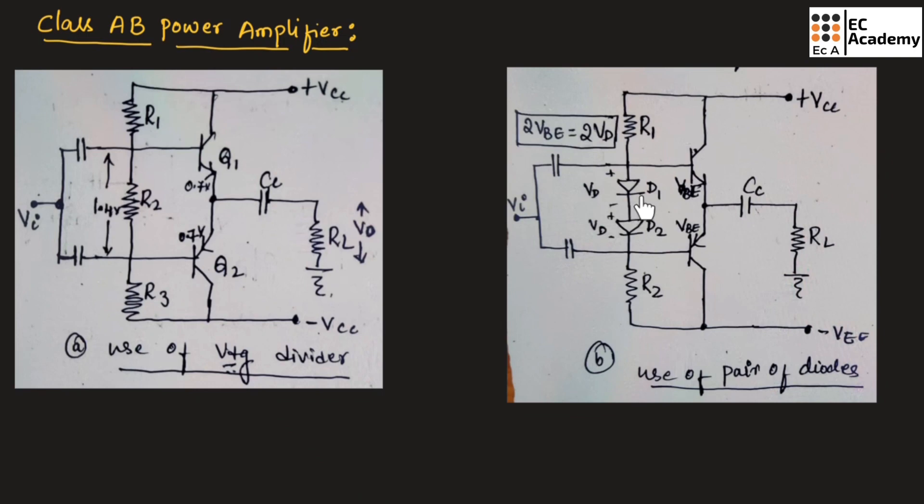Whenever these two diodes are conducting, they will maintain the voltage of 0.7 volts as well as 0.7 volts, totaling 1.4 volts that will be maintained between base and emitter junction of both the transistors. That is why, even though the temperature changes, the voltage between the base and emitter will not change. Hence, across the load, we will get the output without distortion.